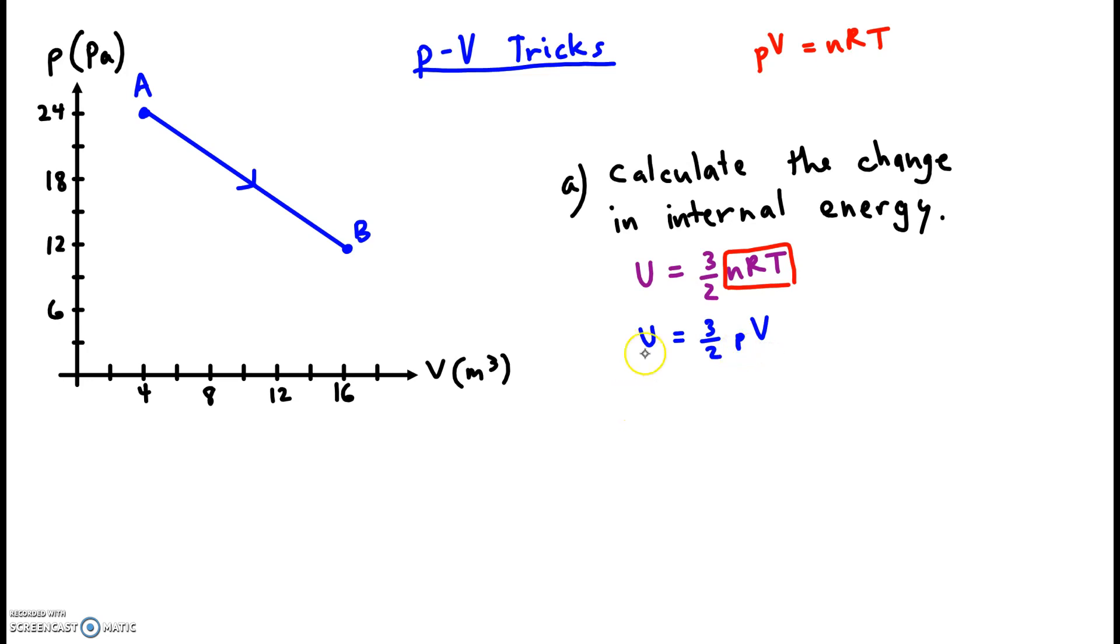Now all we have to do to find the delta U is take U final and subtract U initial. For the final, we'll have to plug in the final pressure, the final volume. And for the initial, we'll have to plug in the initial pressure and the initial volume. When you think about the delta, you could write it like this if you wanted. You could factor out the 3/2 and write it as the change in the product: P final V final minus P i V i.